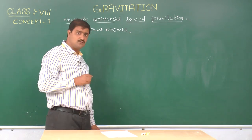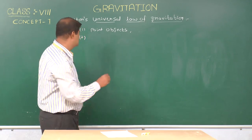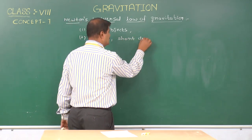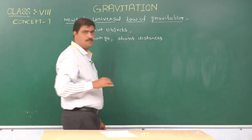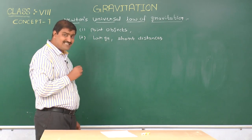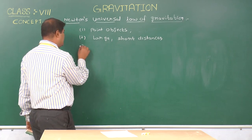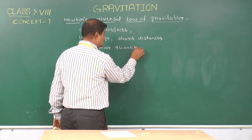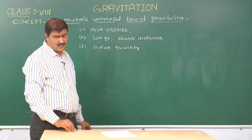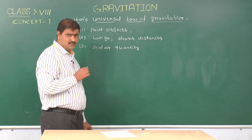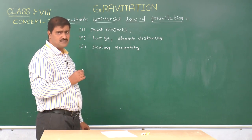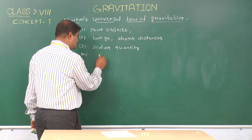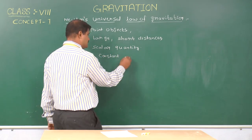This universal law of gravitation holds good for both large and short distances. The universal gravitational constant G is a scalar quantity. As the name suggests — universal — G is constant throughout the universe. It does not vary from place to place. G is constant anywhere in the universe.